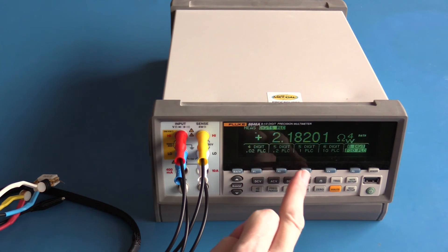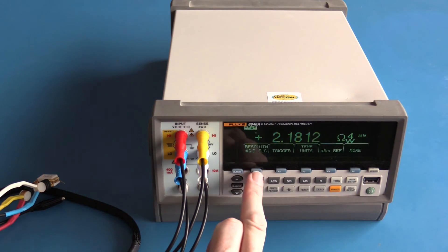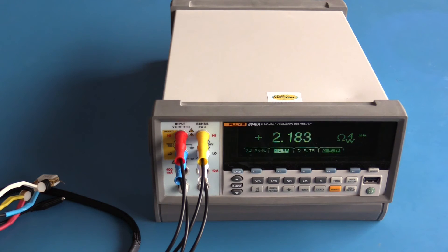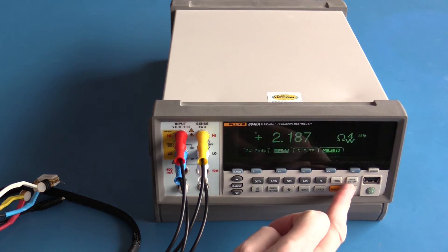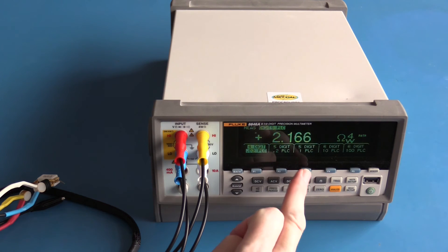I'm going to change that to my preferred five and a half digit resolution, and now I'm going to change to the lowest resolution. At six and a half digit resolution we had a very nice stable reading. At four and a half digits of resolution I think the display is being updated too quickly. This again shows the good compromise between a very quick update at low resolution and a very slow update at high resolution.